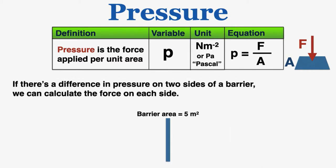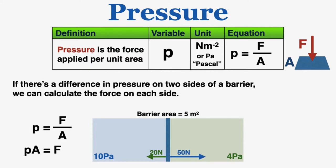If there's a difference in pressure on two sides of a barrier, we can calculate the force on each side. I can pretend that we're looking at this barrier from the side and altogether its surface area is five meters squared. So the pressure on one side I'm going to say is 10 pascals and on the other side there's a pressure of 4 pascals. Again using pressure equals force over area and rearranging to find force. If I multiply the pressure by the area, I'll get the force applied. So the force applied from the green gas is equal to 20 newtons to the left, and the force applied from the blue gas is equal to 50 newtons to the right. So I can see that the net force on this barrier is 30 newtons to the right. So these forces behave just like other forces. We can add them together to find the net force.